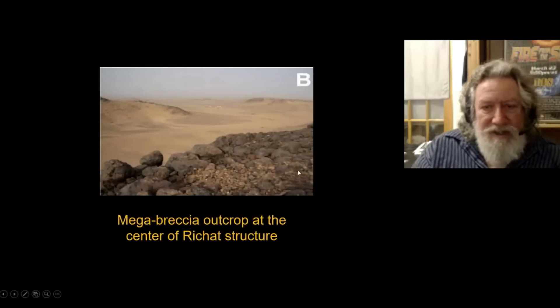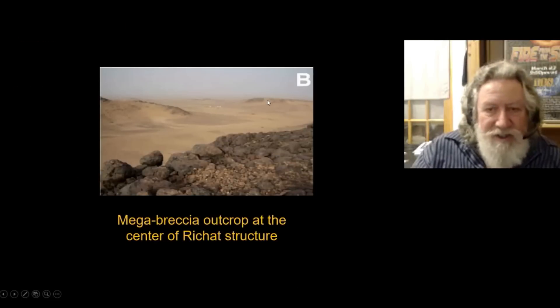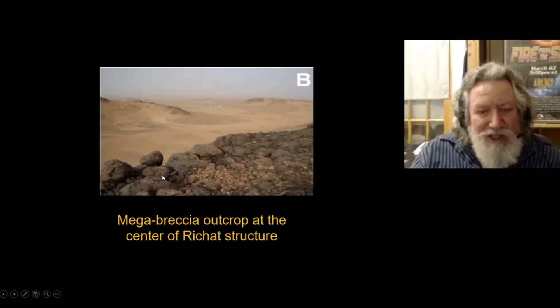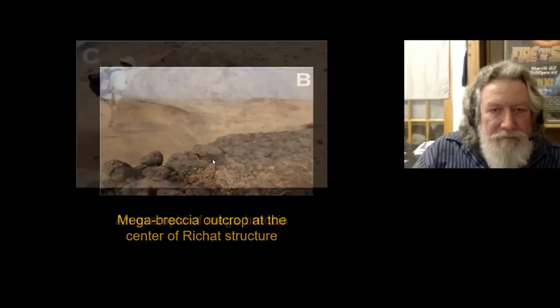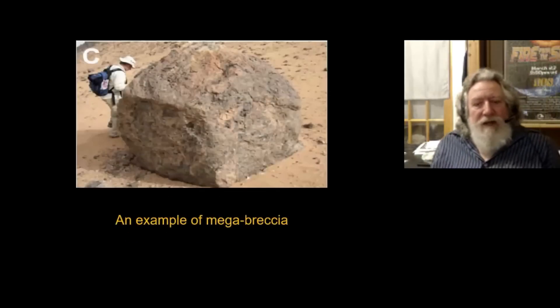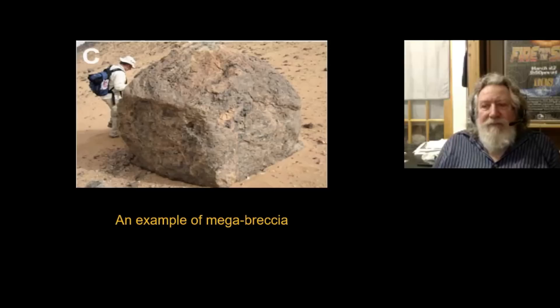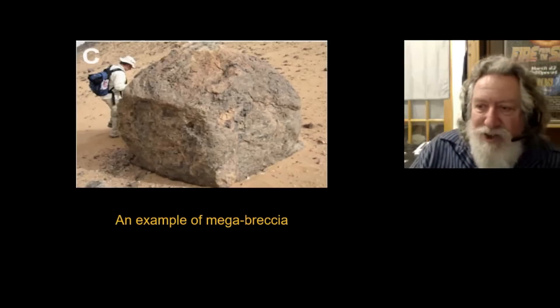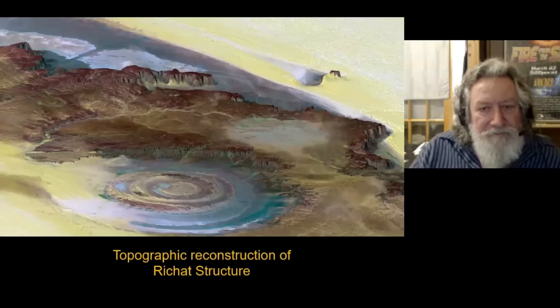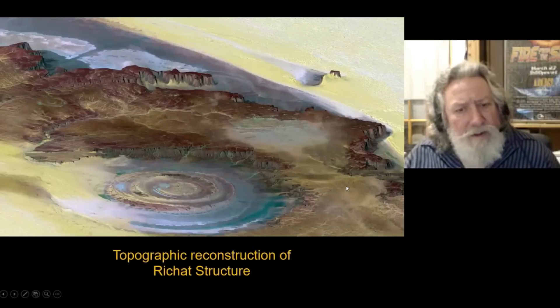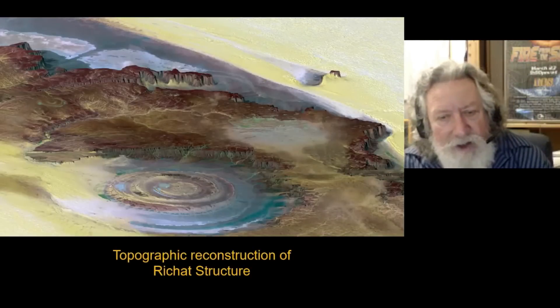So this image, this image, well, yeah, here you can see the ring and this is the mega breccia outcrop at the center, which is right at the center of the structure. And here's an example of a piece of the mega breccia. Yeah. Pretty substantial. It's beautiful though. It's just gorgeous. Oh, it really is. Yeah.